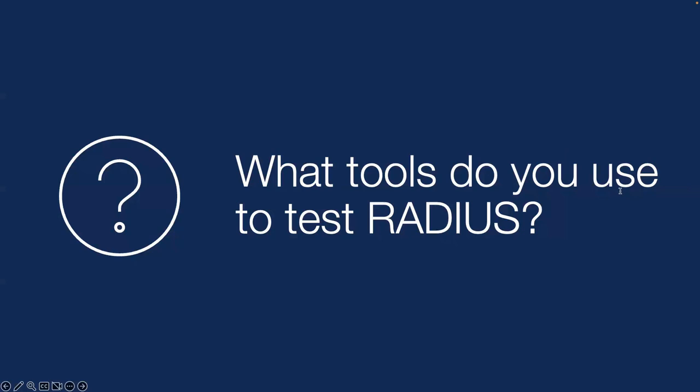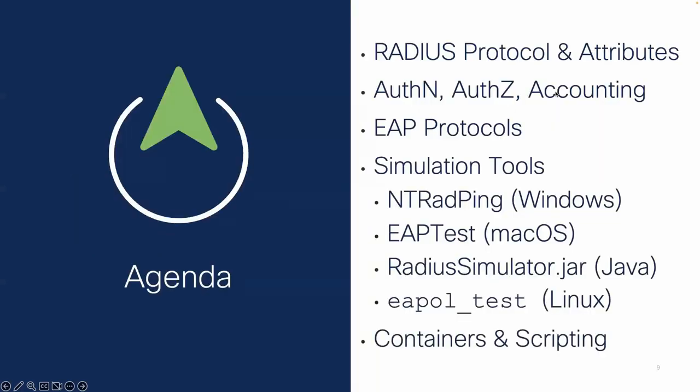I'm going to try and give you guys some different ways of doing this with different tools in the GUI and on the command line. In order to do this, I really want to start by going back to the basics of RADIUS — what it is, how it works down to the attribute level. Because if you don't understand this, you're never going to understand how to simulate it. I'm actually going to be using my Linux commands from a Podman container, which is like Docker, so I can run a Linux container and run everything there.